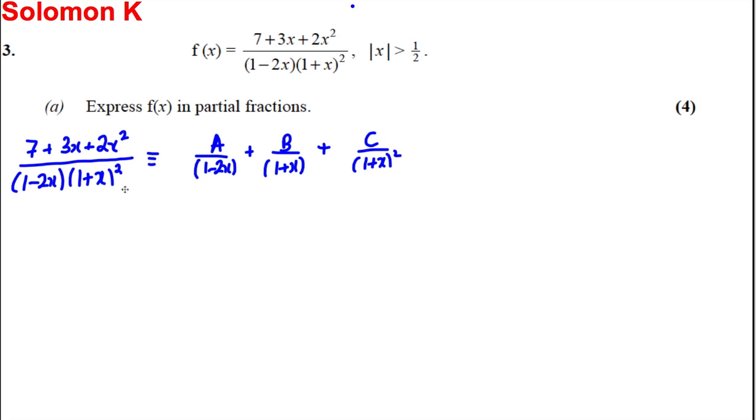Now our next line would therefore be making this have a common denominator. 7 plus 3x plus 2x squared is the same thing as A multiplied by (1 plus x) squared, B multiplied by (1 subtract 2x)(1 plus x), and C multiplied by (1 subtract 2x).